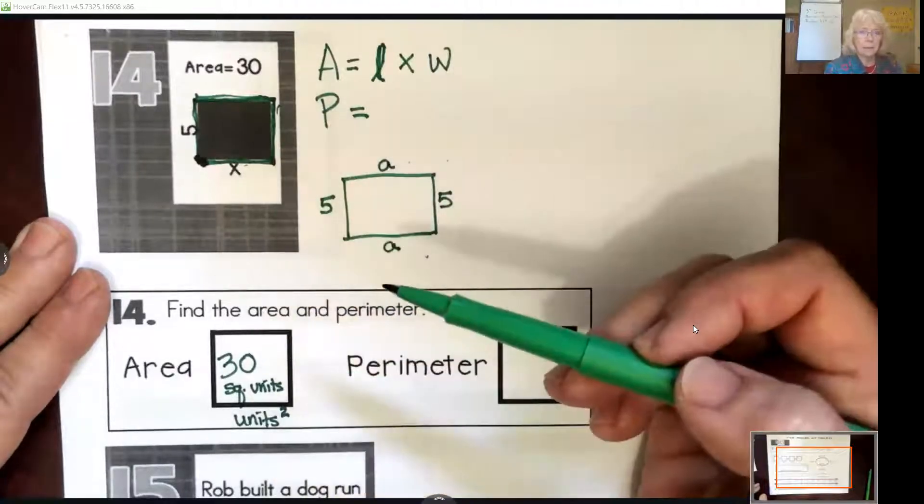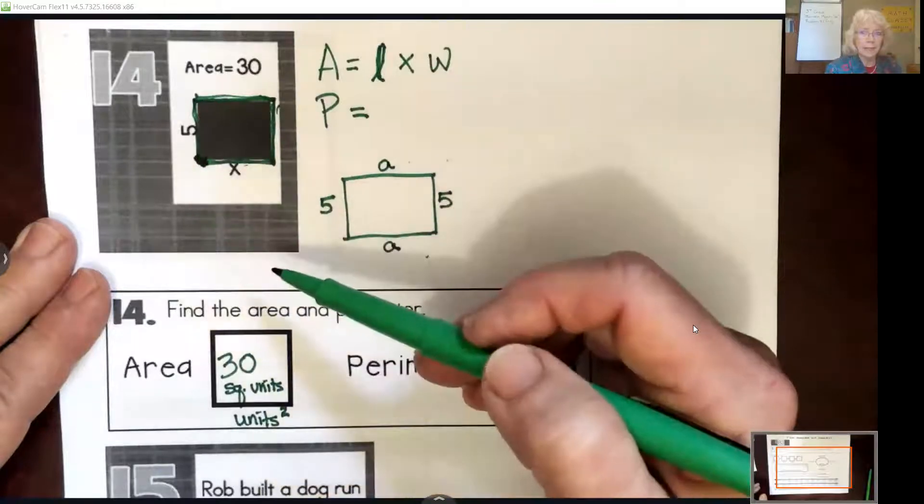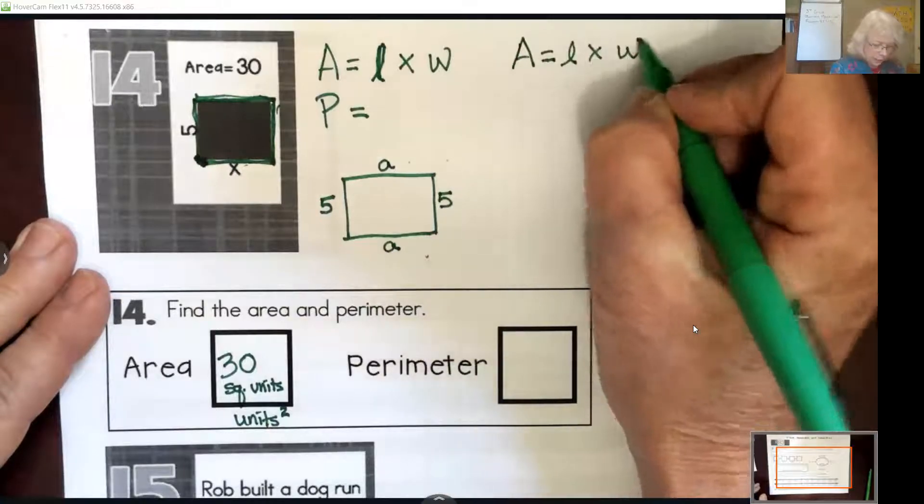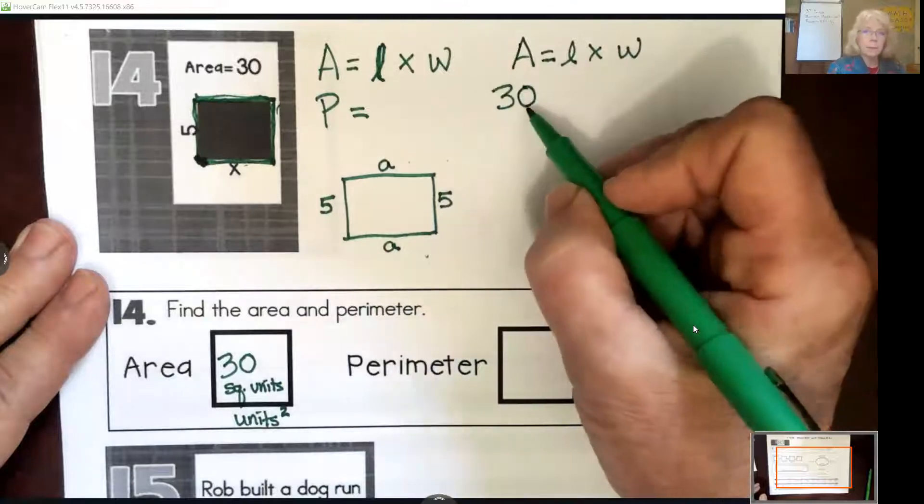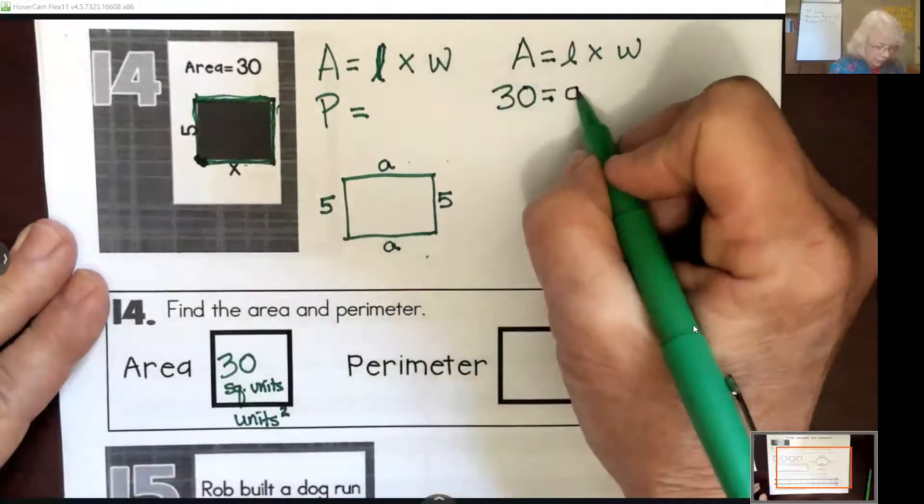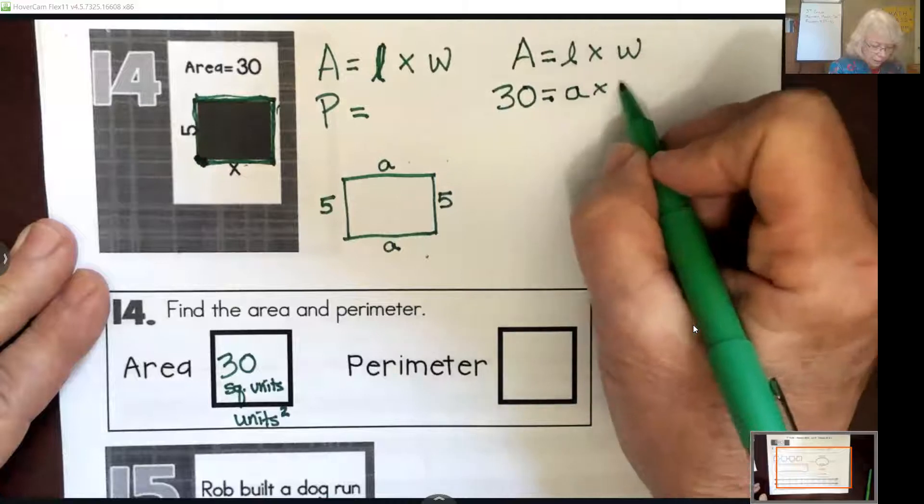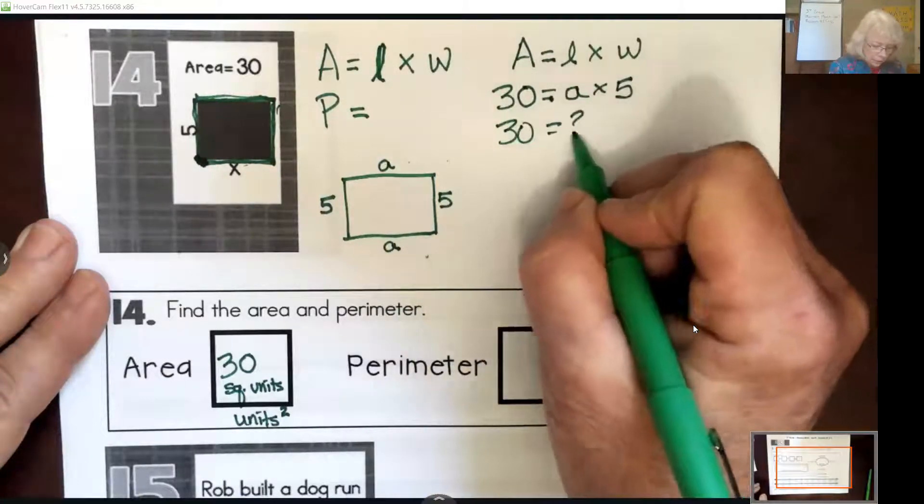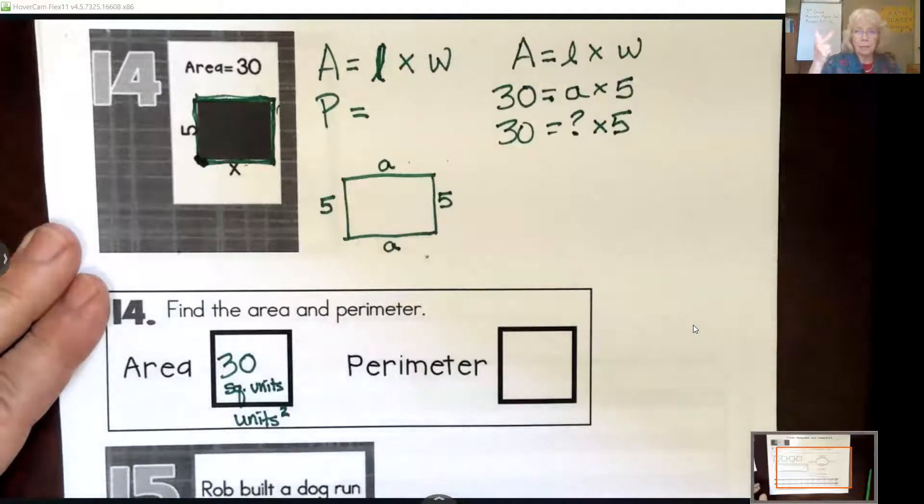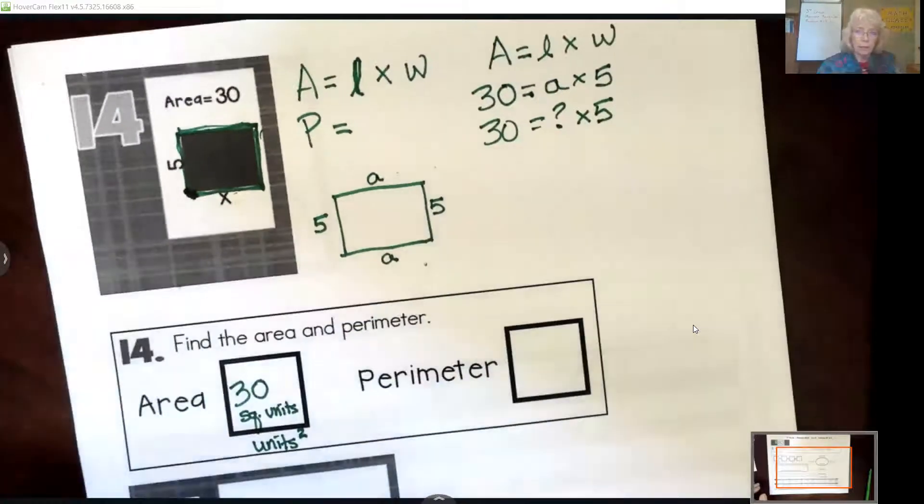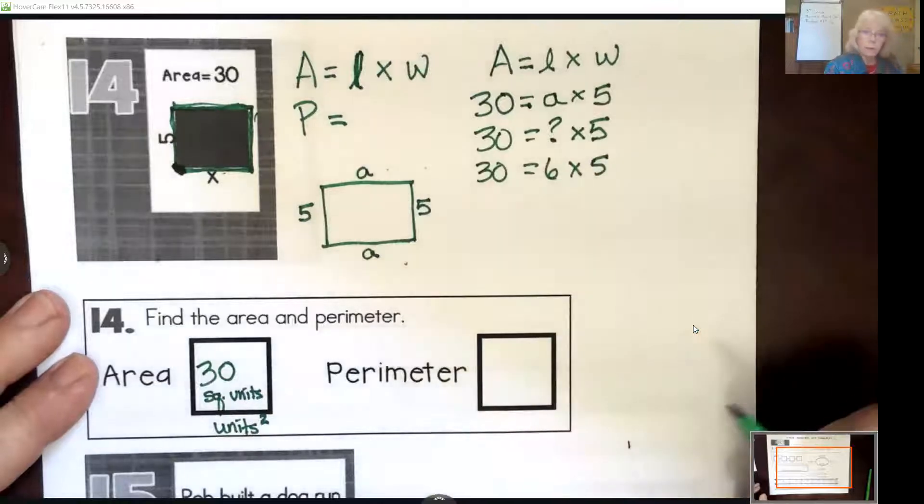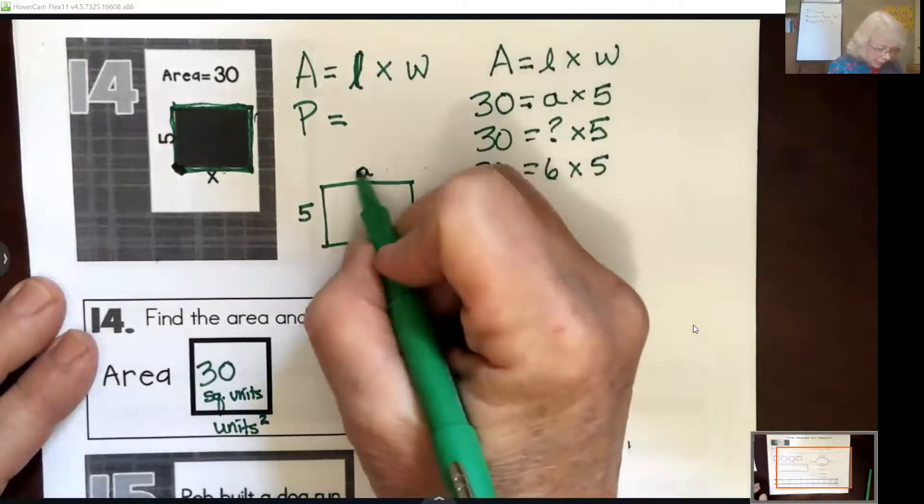So watch how this goes. We have area equals length times width, and we know area is 30 square units, which is equal to A, our length and five our width. So this looks like 30 equals what number times five is equal to 30? Well, we could skip count by fives and see. Five, 10, 15, 20, 25, 30. So I'm at six fingers. So this is 30 equals six times five, which means our missing side length is six.